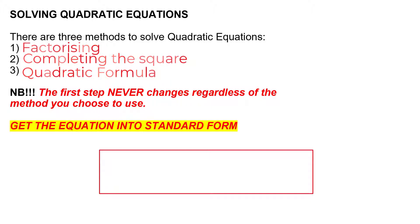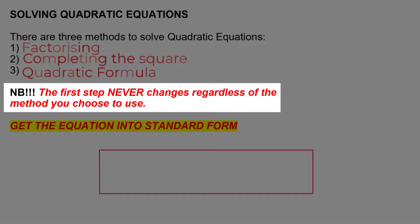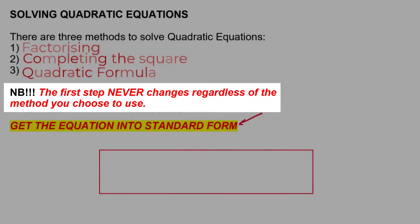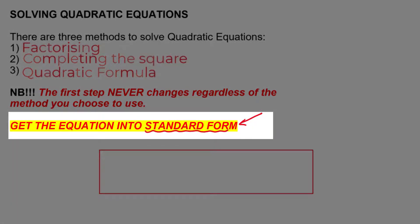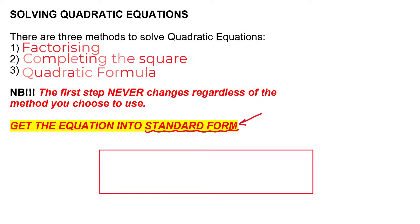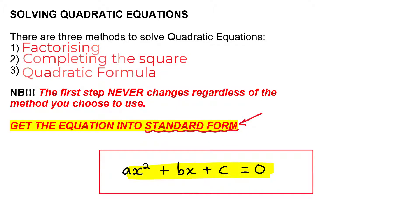However, no matter which method you decide to use to solve quadratic equations, you need to understand that the first step will never change. That first step is to get your equation into standard form. Whenever you're solving a quadratic equation, the way you want to set it up is ax squared plus bx plus c equals zero. This is the standard form of a quadratic equation.